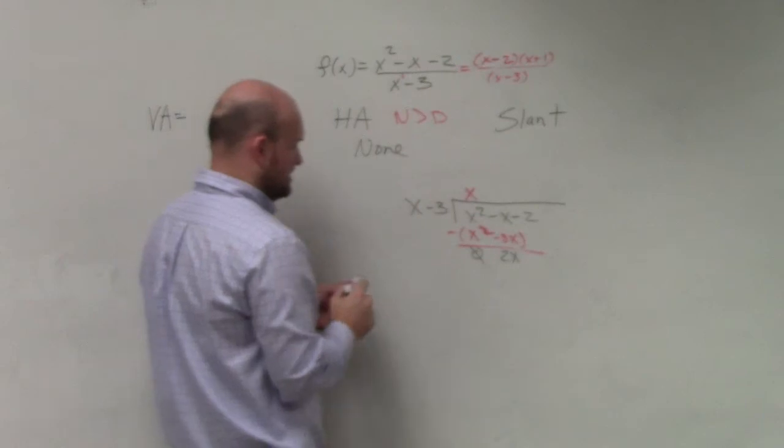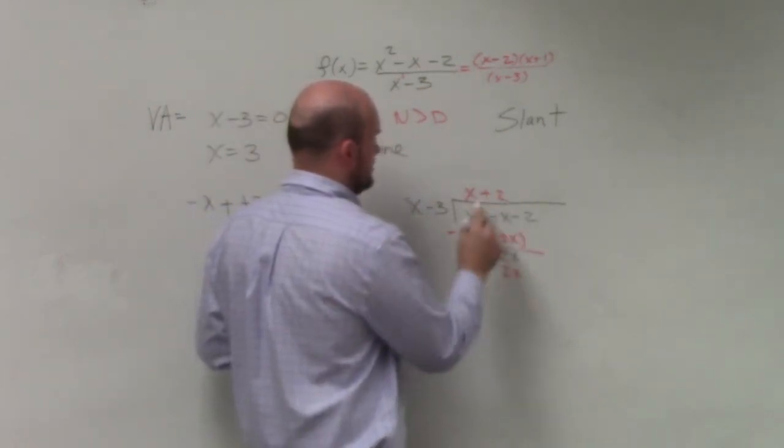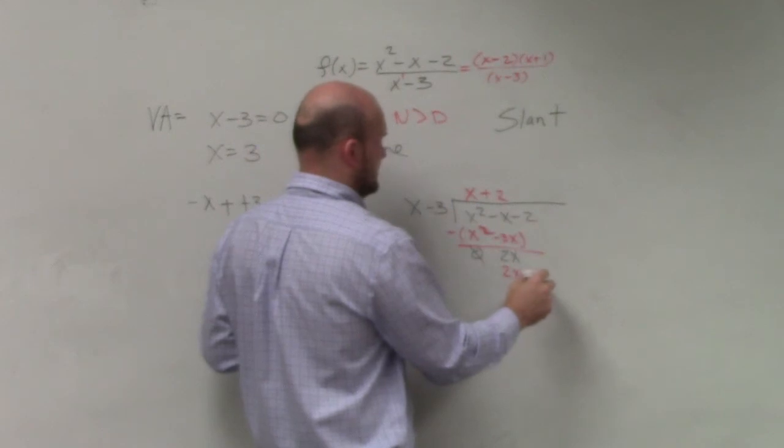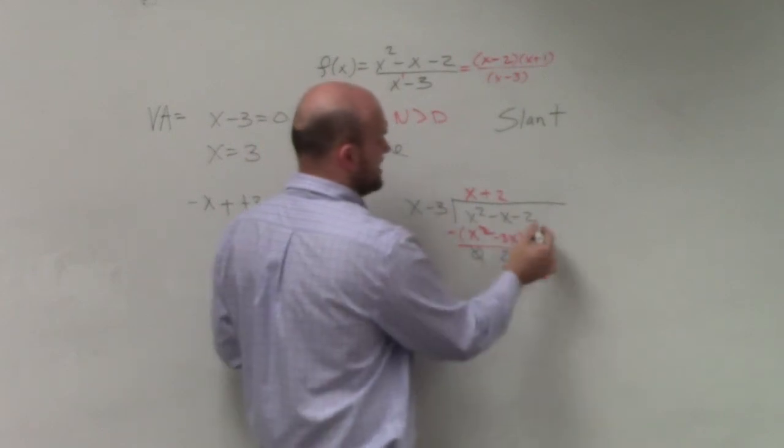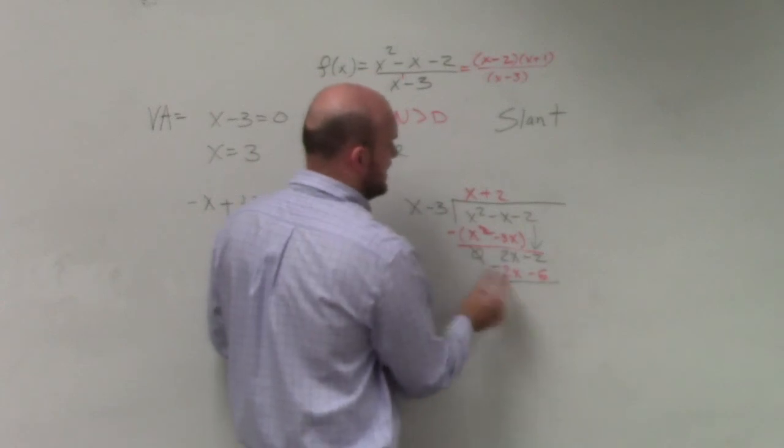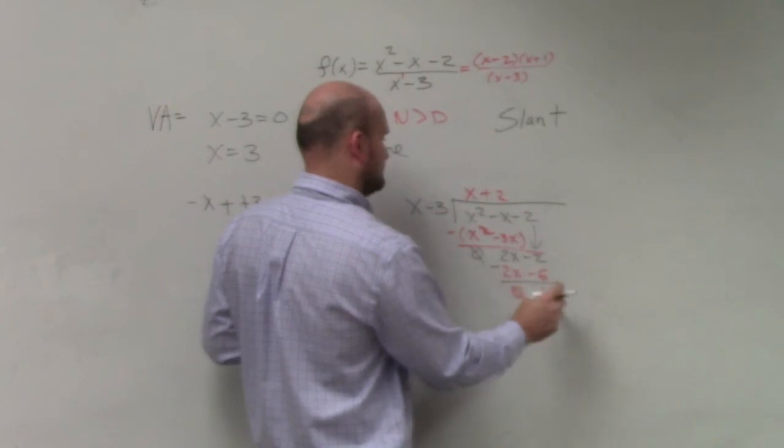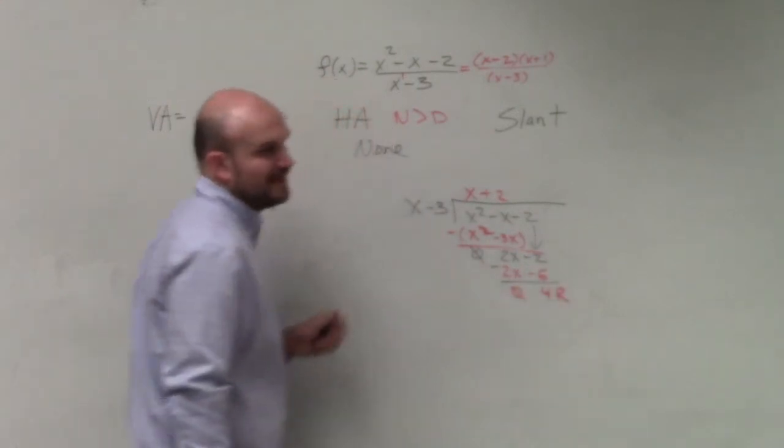x goes into 2x how many times? 2 times. 2 times x is 2x. 2 times negative 3 is negative 6. Bring down the negative 2. It really doesn't matter from here. You're going to get 0, and you're going to get 4, which is your remainder.